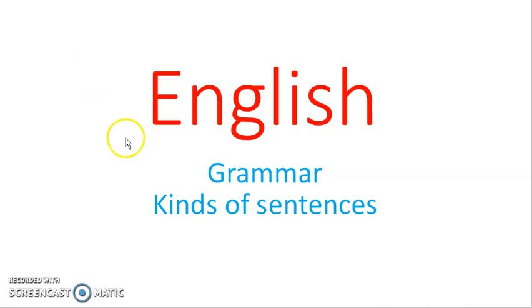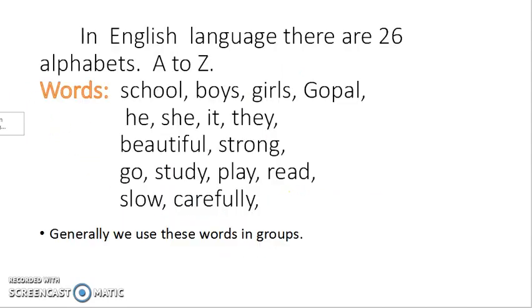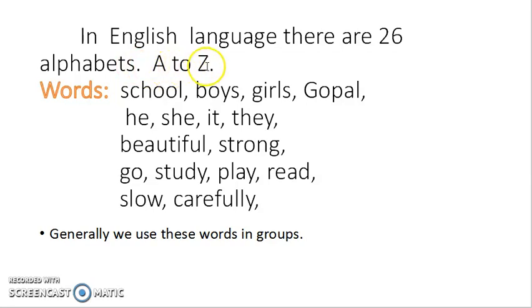Hello students. Welcome in this video of English grammar. Today we are going to learn kinds of sentences. Before that, we will see that in the English language there are 26 alphabets, A to Z.